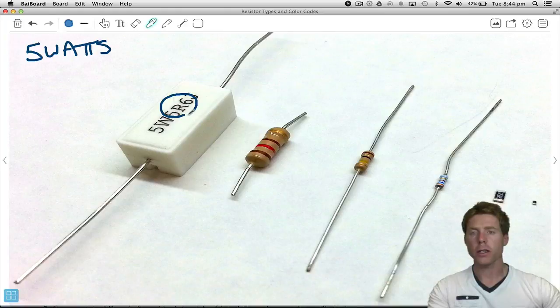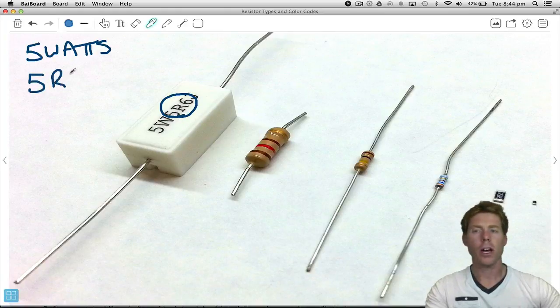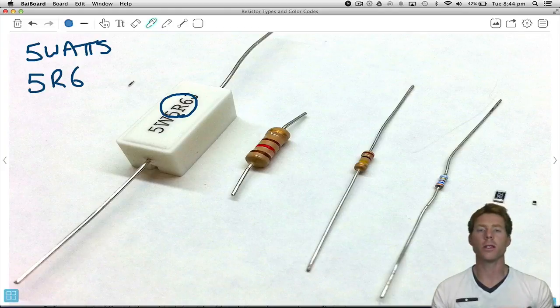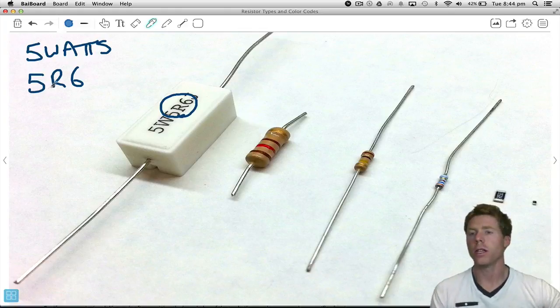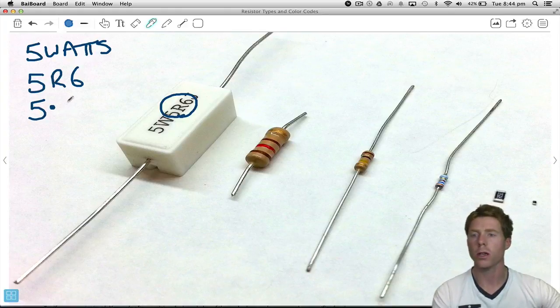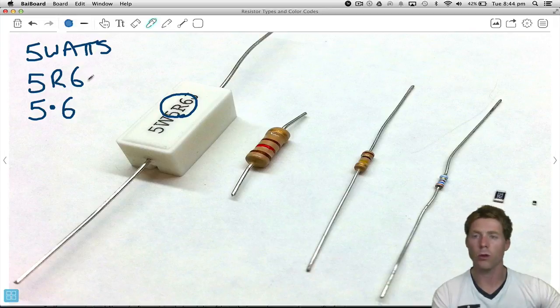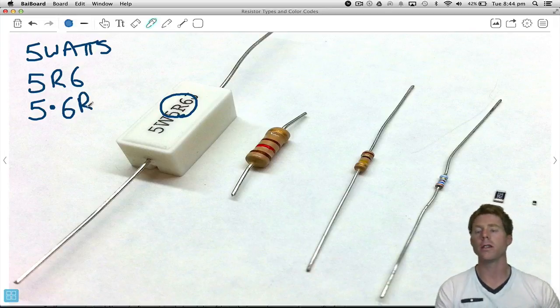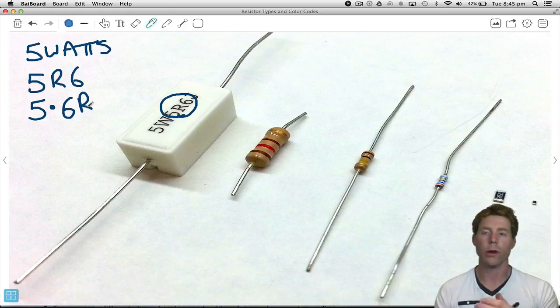Now the 5R6, well what does that actually mean? So I haven't actually mentioned this before, but this is one type of convention that they use to represent resistor values. What they're actually doing here is they're putting a letter in the place of the decimal point. So if I was to go 5 and then get rid of that R, replace it with a decimal point, then do 6, and then we move the R across to the end, it tells us that it's 5.6 ohms, the R representing ohms.